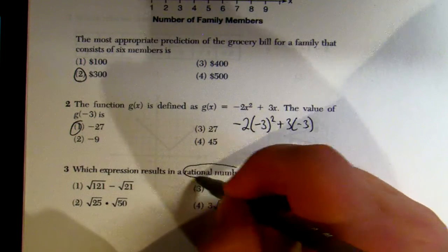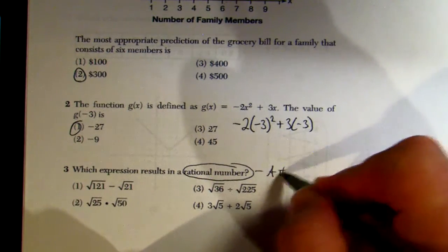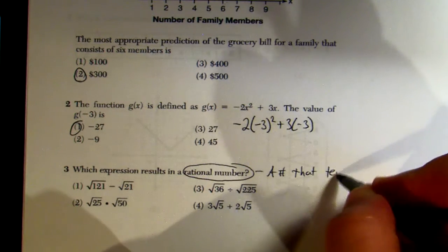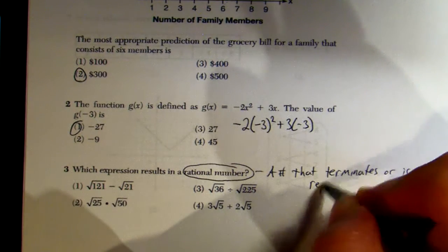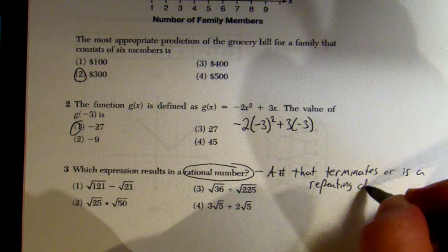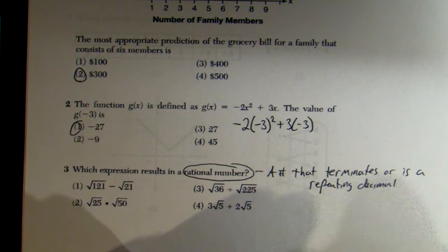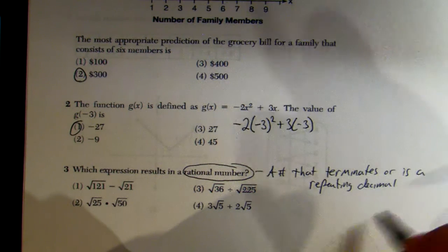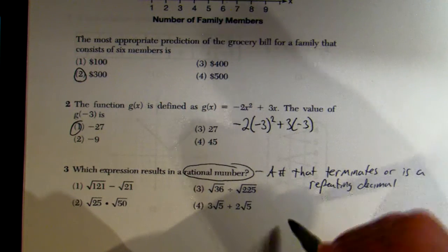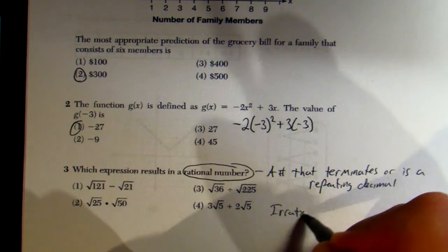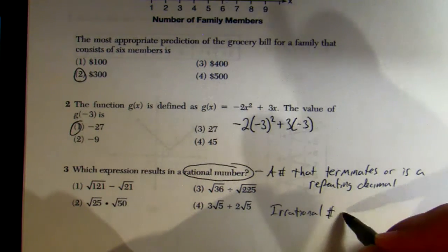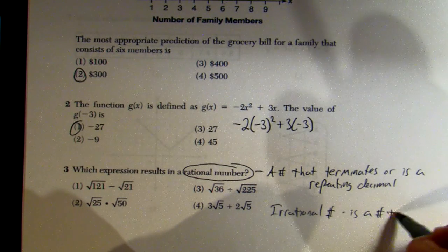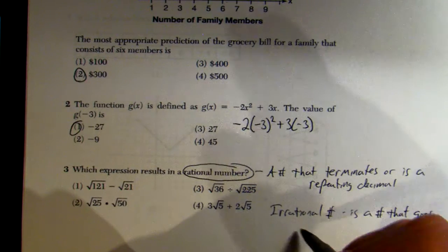Question 3: which expression results in a rational number? Remember, a rational number is a number that terminates or is a repeating decimal — basically all fractions you can write are rational. An irrational number, for your study purposes, is a number that goes on forever without repeating.